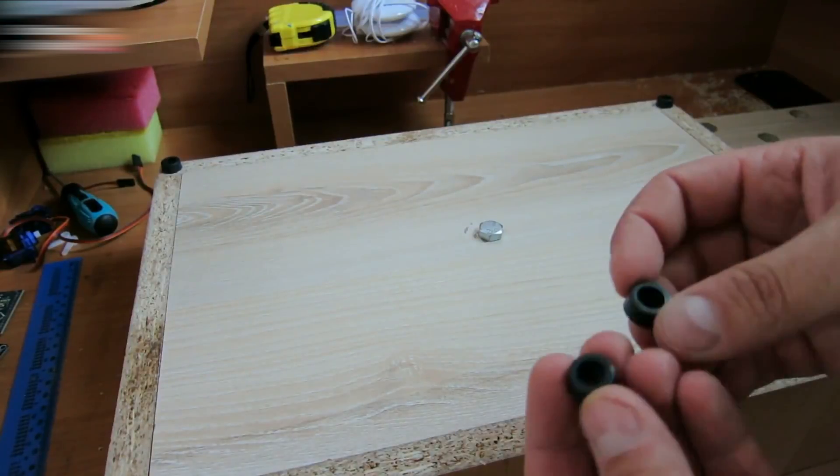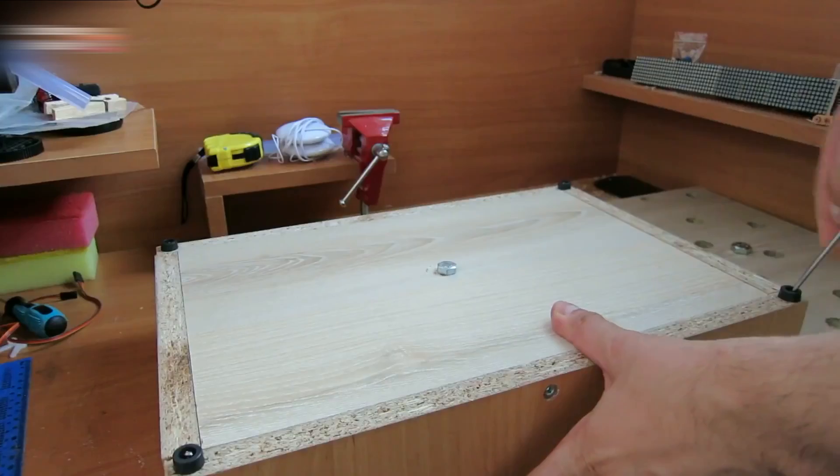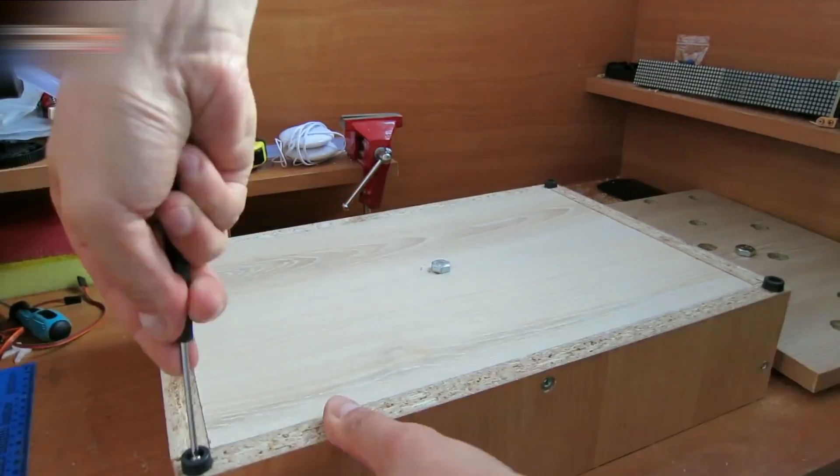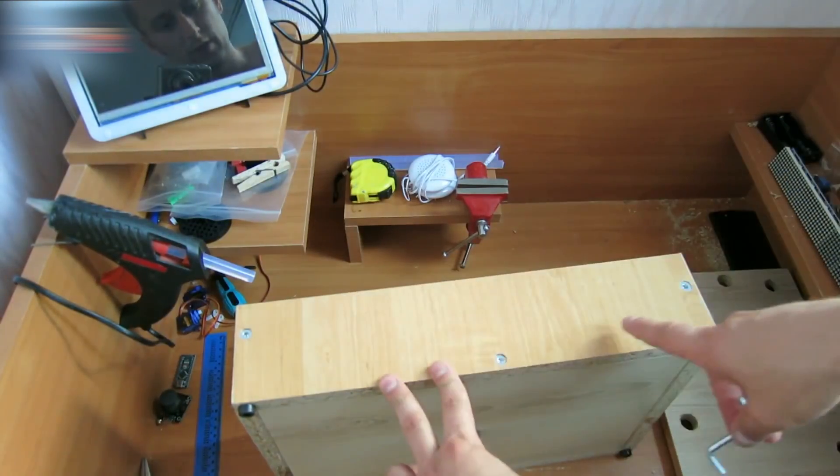Attach the legs to the back side of the box. The small ones, like these, should fit. Take out one of the box sides. There are three Confirmat screws there.